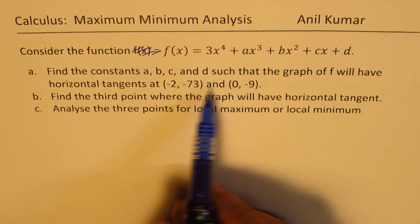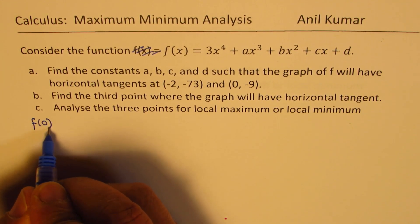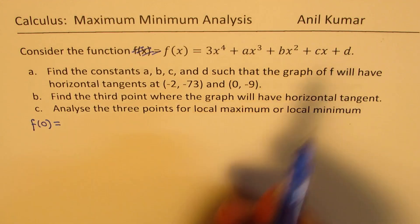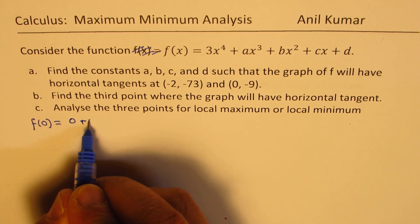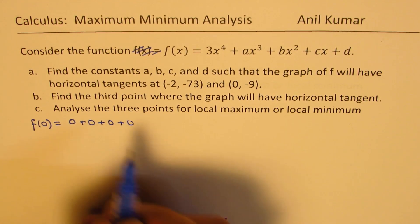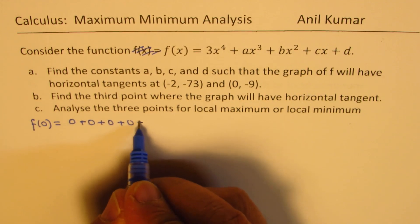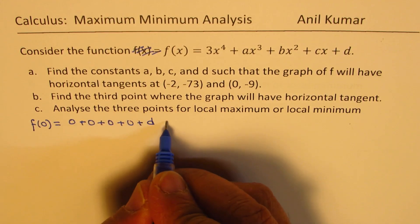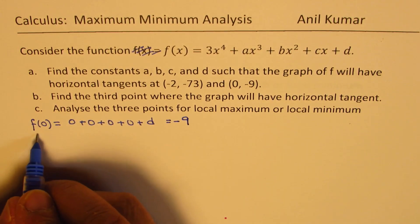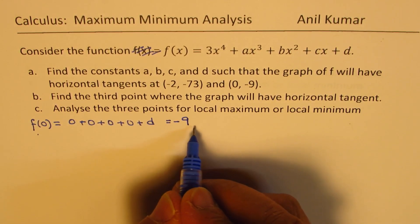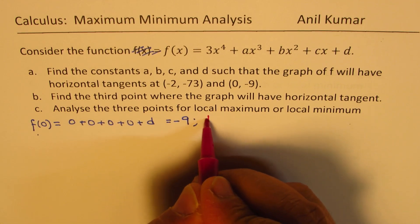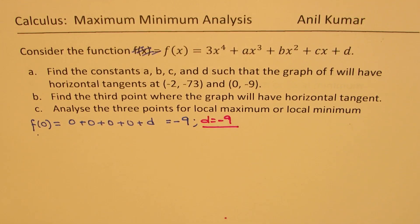First, let's use the given points. If we find f(0): substituting x = 0, we get 0 + 0 + 0 + 0 + d, which is just the value of d. Since the point is (0, -9), d equals -9. So our first result is d = -9.